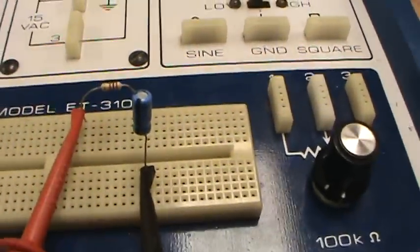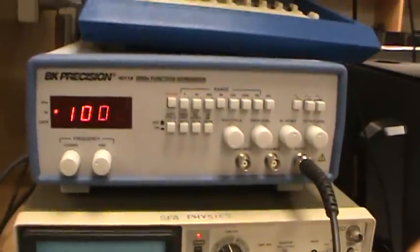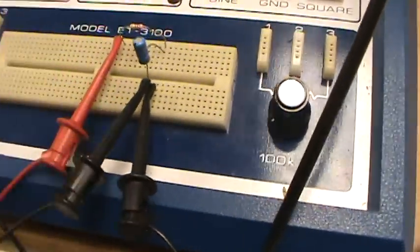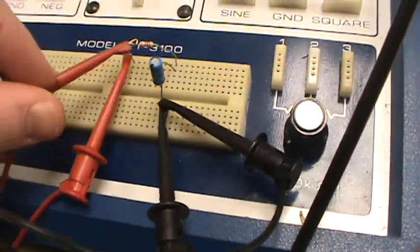If you want to monitor the output of the function generator to verify that it really is 2.5 volts peak to peak and 60 hertz, then you can just simply take the oscilloscope lead right here and make sure you have negative to negative and positive to positive.